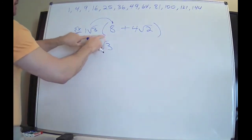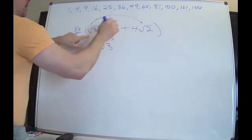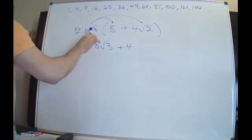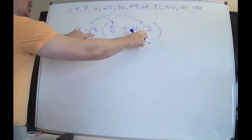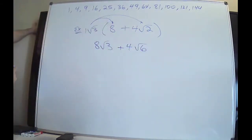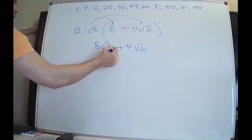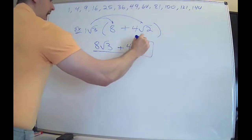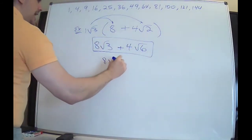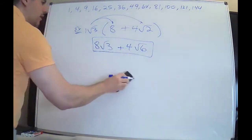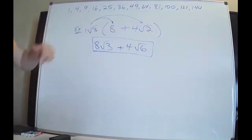So when you multiply, there's an invisible one outside: one times eight stays on the outside, and radical three stays inside — you cannot make this radical 24. Now for the second term: one times positive four is plus four, and radical three times radical two — they're both in jail so they can multiply — giving radical six. Radical three and radical six are not like terms, just like eight x plus four y; you cannot add them together. Stop there.